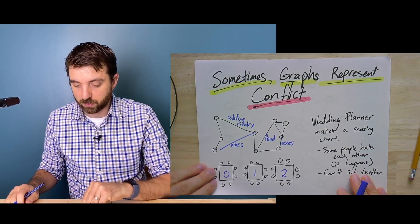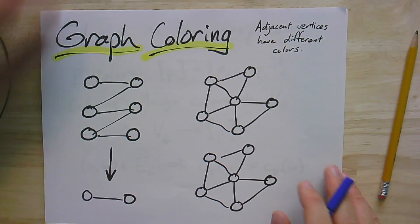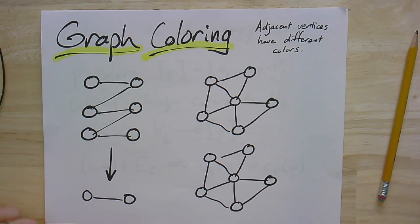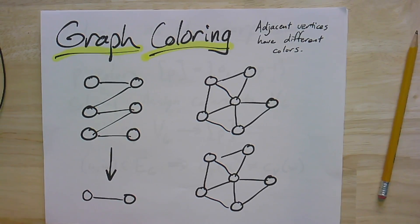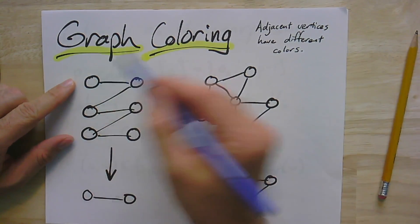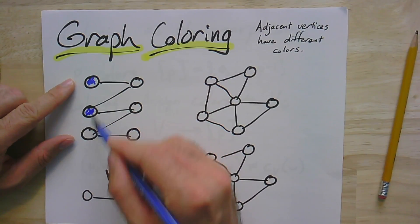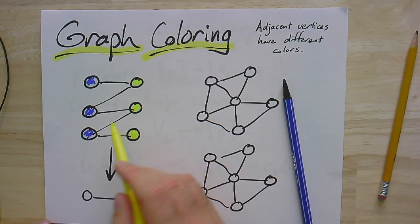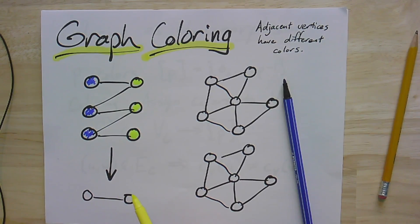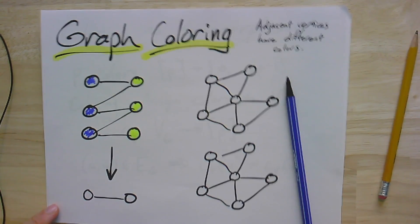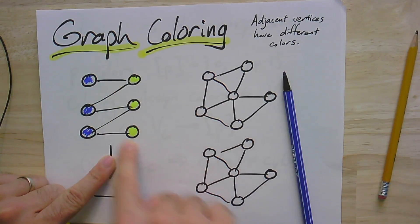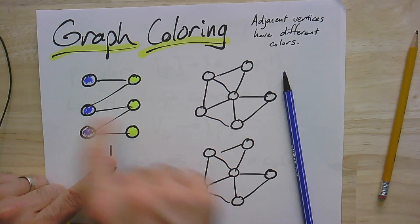One way to think of this is what we call graph coloring. Here are some graphs. This first one is a nice bipartite graph. If I assign colors to the vertices — replacing tables with colors — the goal of graph coloring is to assign colors so that if there's an edge between two vertices, they have different colors. In the case of bipartite graphs, we know this works perfectly: no edges exist between vertices on the same side. That is, in fact, the definition of a bipartite graph, so we can color one part one color and the other part another color.